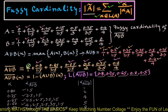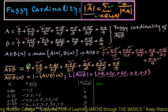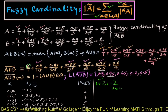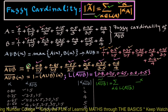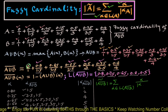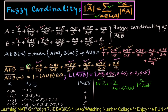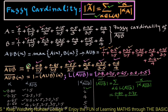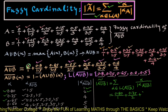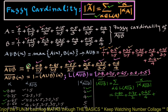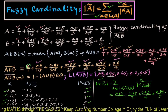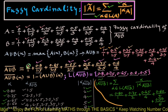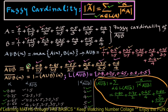The fuzzy cardinality of complement of (A union B) is the summation for alpha belonging to level set of (A union B) bar of alpha upon cardinality of alpha cut (A union B) bar. This equals: 0.8/1 + 0.75/2 + 0.65/4 + 0.60/5 + 0.50/6. This is the required fuzzy cardinality of complement of (A union B).